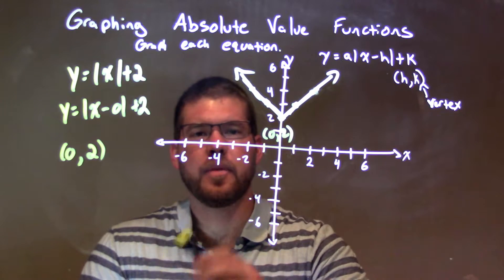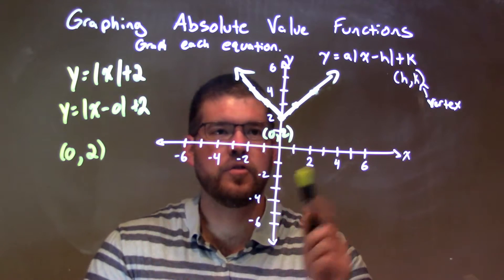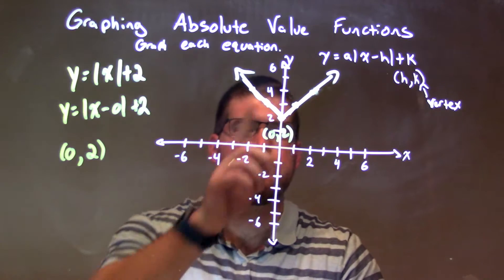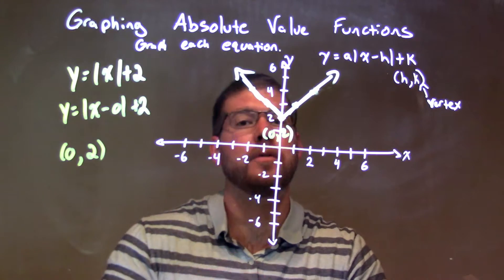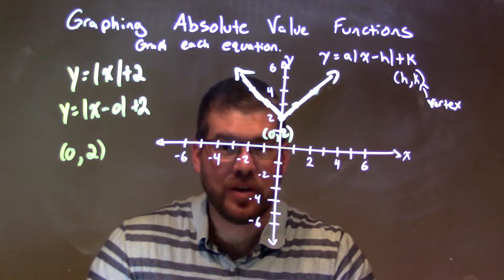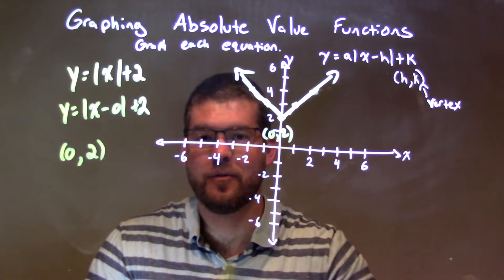Our a value is a positive 1, so it's a v-shape, and our slope is 1. So we went up 1 over 1, up 1 over 1 to the right, mirrored that on the left, up 1 to the left 1. Then, connected the dots, making my v-graph, and we have our final answer.